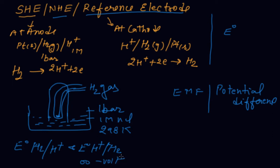That's why we can check whether a particular metal is showing oxidation or reduction. When we attach any other metal with the hydrogen electrode, if that metal is showing oxidation, hydrogen will show reduction, and vice versa. That's why SHE has been used and is very useful.